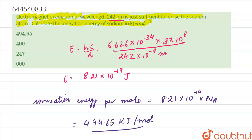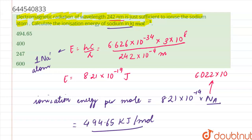Here we have multiplied by Nₐ because we calculated it for 1 sodium atom. Since we need the ionization energy in kilojoule per mole, we multiply by Avogadro's number, which has a value of 6.022 × 10²³.